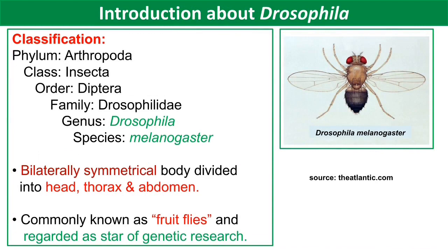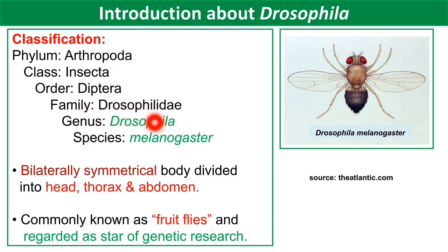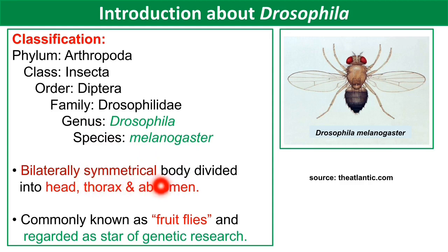Now, the introduction about Drosophila — its classification and characters. Drosophila belongs to phylum Arthropoda, class Insecta, order Diptera, family Drosophilidae, genus Drosophila, and species melanogaster. It is bilaterally symmetrical and the body is divided into three parts: head, thorax, and abdomen. Drosophila is commonly known as fruit flies and is regarded as a star of genetic research.